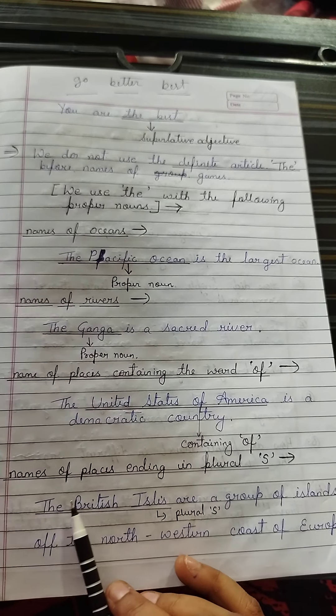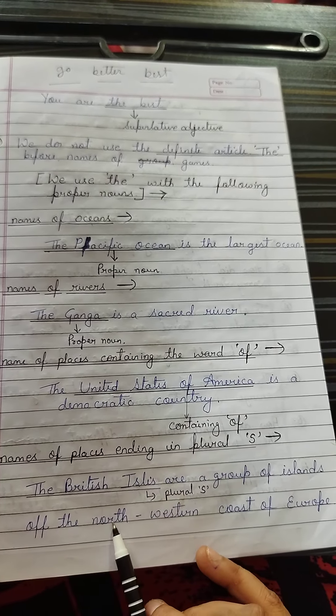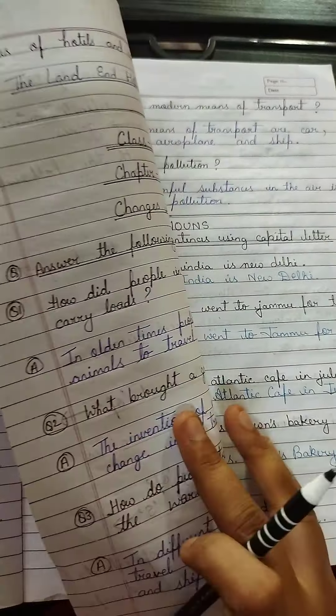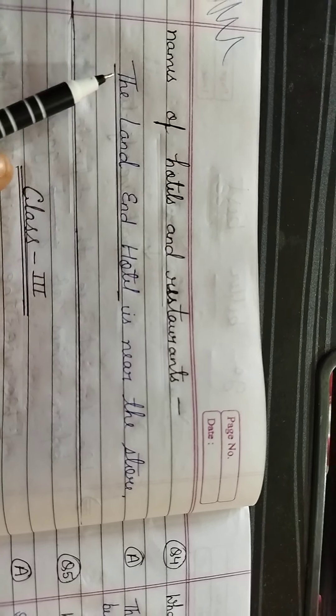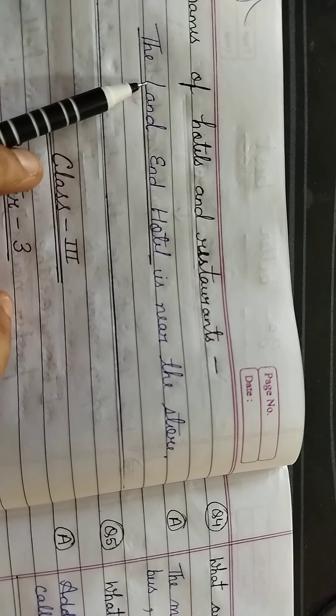We also use 'the' when naming a noun that refers to an entire group of its kind. For example: 'The whale is a mammal.' When we talk about whales in general, 'the whale' indicates the entire group or species of mammals. So when talking about an entire group or kind, we use 'the.' Example: 'The whale is a mammal' — 'the whale' represents the entire group.